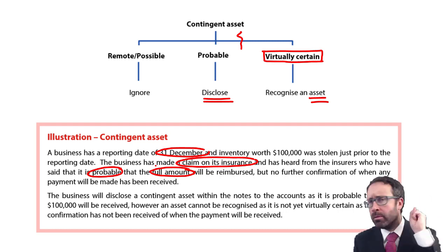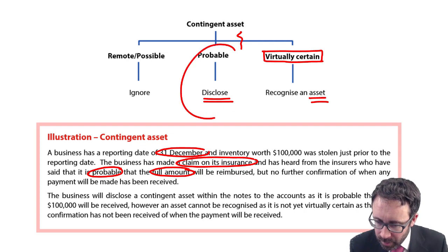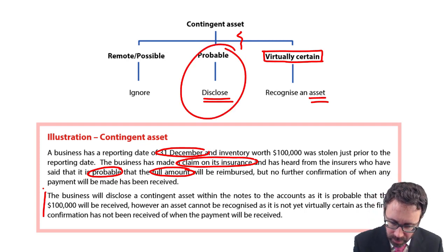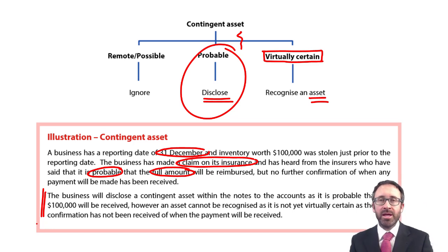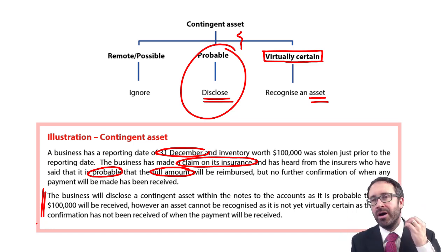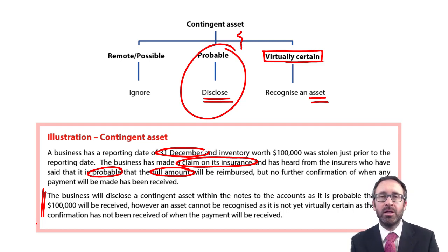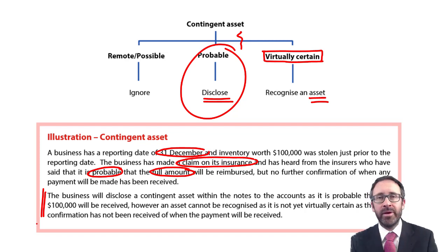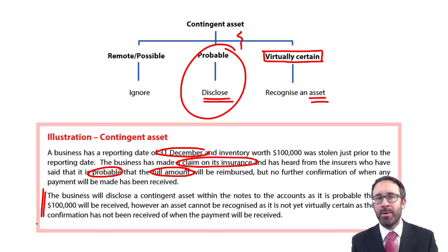It says probable. So we disclose, don't we? Therefore, the business within the notes to the accounts will have a contingent asset note and they will disclose that they are expecting to receive £100,000 at some point within the next financial year. That's the quantitative amount — the £100,000 — and the qualitative element is the written explanation of what it relates to and why it came about.